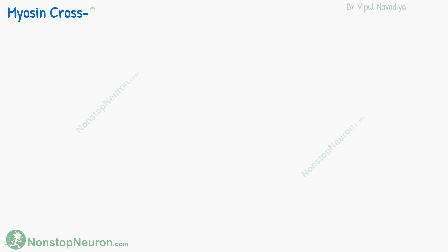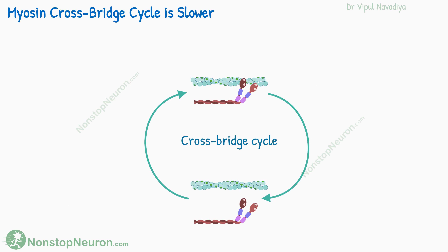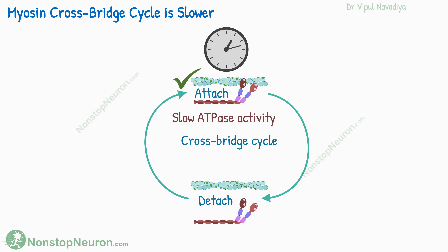Next, the myosin crossbridge cycle occurs at a slower rate in smooth muscles. The crossbridge cycle involves attachment of the myosin head with actin and its bending to produce movement, and then detachment. The duration for which myosin remains bound to actin is mainly believed to be increased. A possible reason is the slow ATPase activity of myosin heads in smooth muscle, which is responsible for detachment. Thus, the myosin crossbridge cycle occurs at a slower rate in smooth muscles.